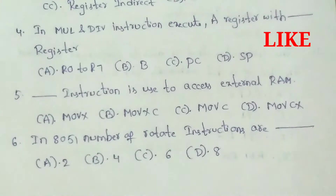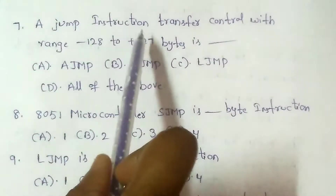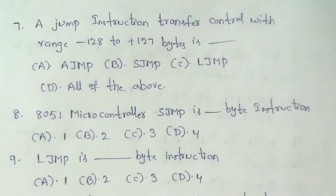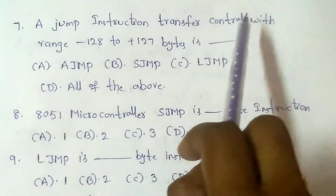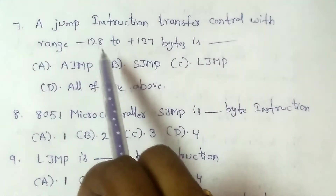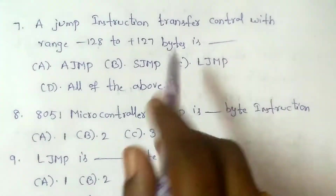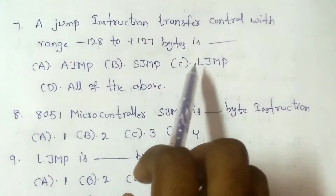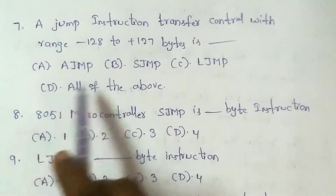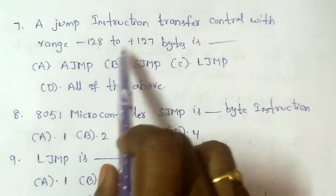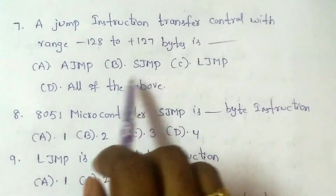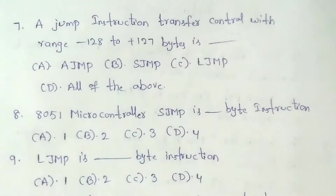Next question: A jump instruction that transfers control within a range of minus 128 to plus 127 bytes is which type of jump? Options: A) Absolute jump; B) Short jump; C) Long jump; D) All of the above. The range minus 128 to plus 127 corresponds to a short jump. Answer: option B, short jump.